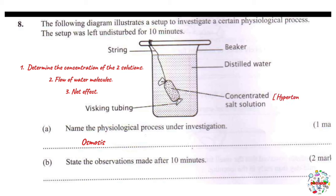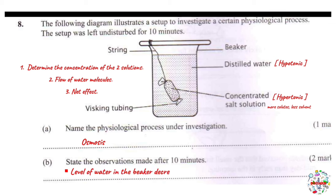The effect of this flow of water: the visking tubing will expand or swell. Meanwhile, there will be a drop or decrease in the level of water within the beaker. Those are your two observations: observation one — the level of water in the beaker dropped; observation two — the visking tubing expanded or became swollen.